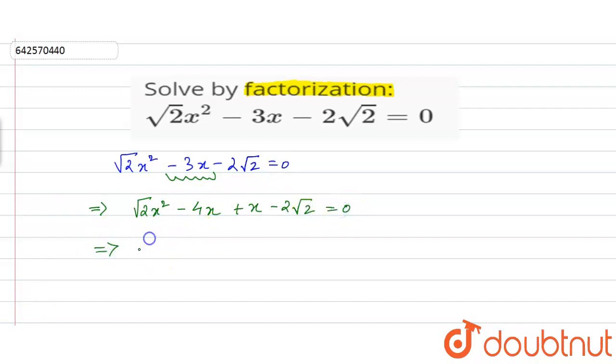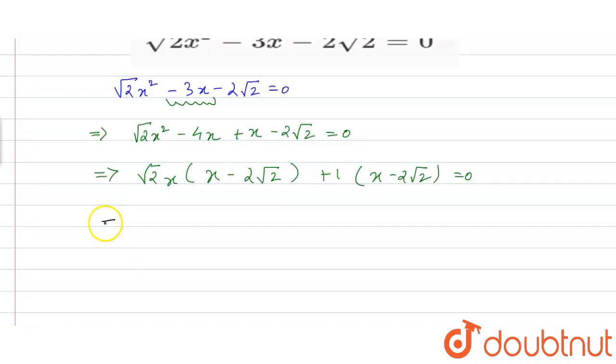So we have root 2x common, we have x minus 2 root 2, plus 1 times x minus 2 root 2 is equal to 0. From here we have root 2x plus 1 into x minus 2 root 2 is equal to 0.